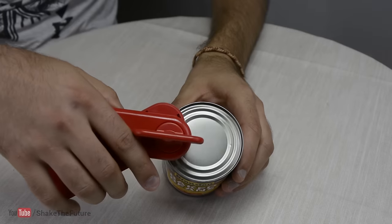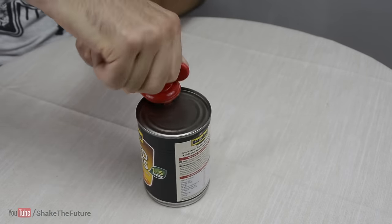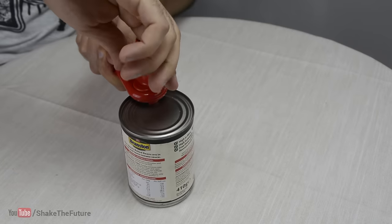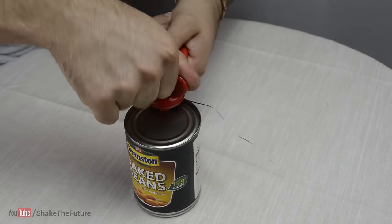Planning to eat beans on toast? Don't throw away that can. Use a safety can opener to open the can. It opens the can from the side without leaving any sharp edges.